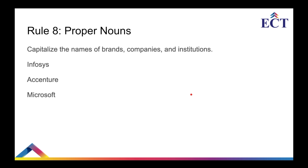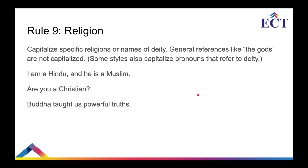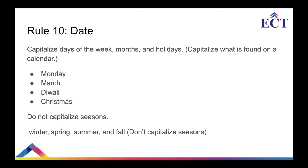Rule eight: capitalize the names of brands, companies, institutions, or any proper noun. For example, Infosys, Accenture, Microsoft, etc. Rule nine: religion. Capitalize specific religions or names of a deity. General references like 'the gods' are not capitalized. Some stylists and grammar guides also capitalize pronouns that refer to a deity.